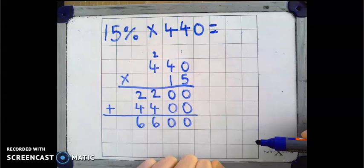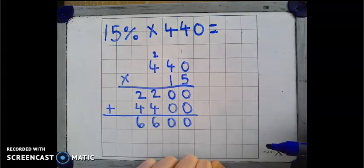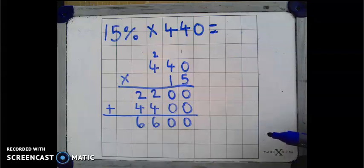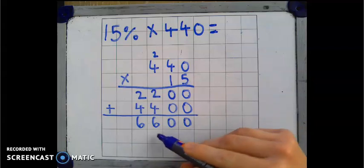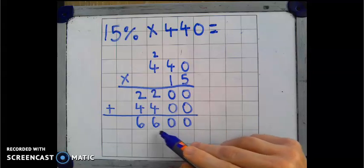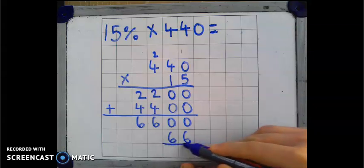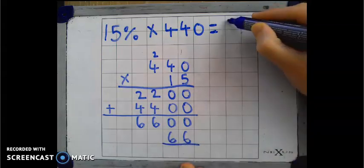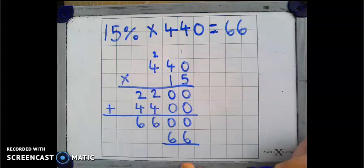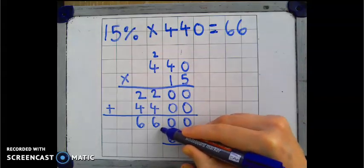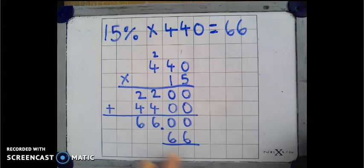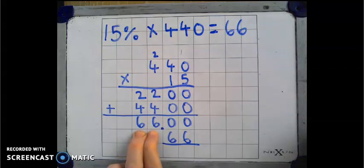Step 2 is to divide the answer by 100. And if we remember from before, when we divide by 100, the digits all move two places to the right. The 6 moves to here, and that 6 moves to here, giving us an answer of 66. Some people would just say that we could pop the decimal point in there and we can already see our answer.